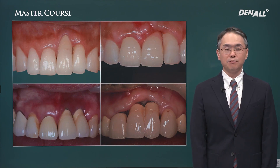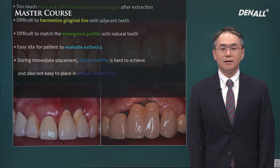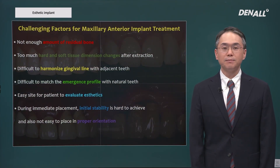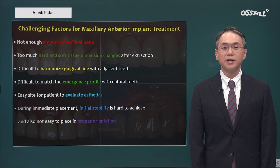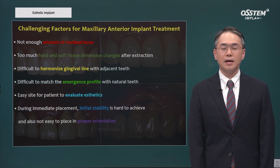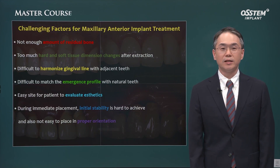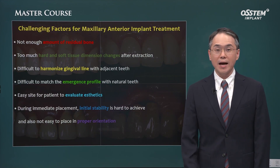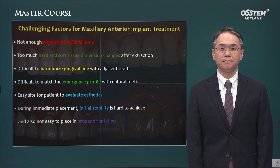However, as shown on this slide, there are many limitations in doing upper anterior implant placement. This area is easily accessible by the patient, so we need to focus more on aesthetics. In most cases, this would be an immediate implant placement case. We need to anticipate the changes that are going to occur in hard tissue and soft tissue and place the implant in the ideal position.